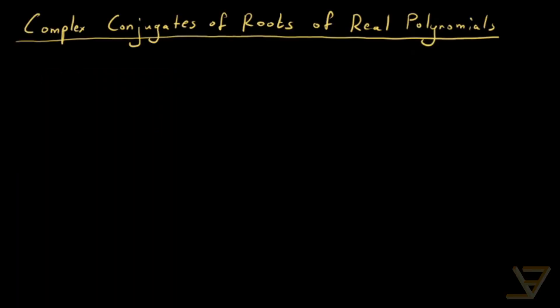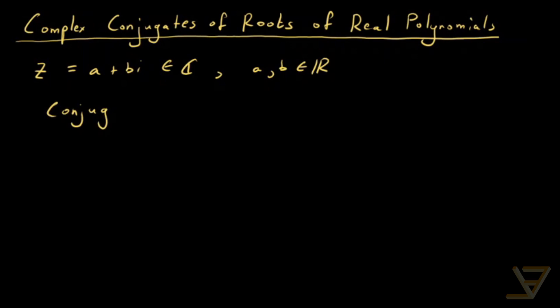Hi everyone. Let's take a look at real polynomials and their complex roots. Let's say that z equals a plus bi is a complex number where a and b are in the reals — this is the rectangular form. Then we say that the conjugate of z, written with a bar over it, is equal to a minus bi. This is essentially a reflection over the x-axis.